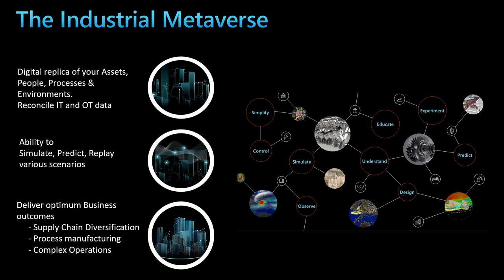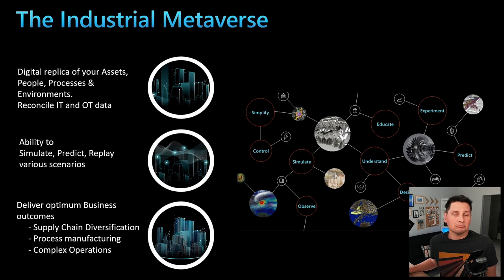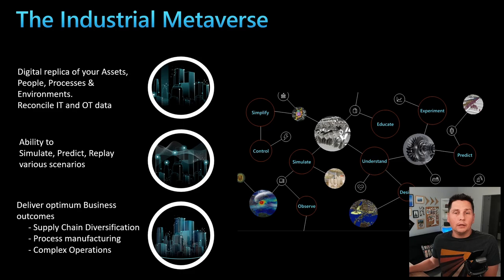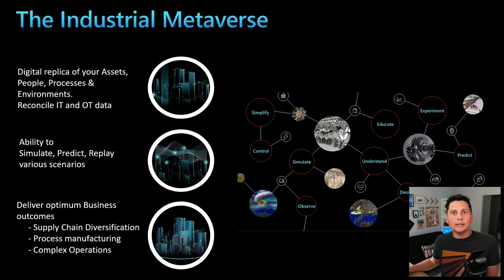Before jumping into the demo, I want to touch on one concept which we call the industrial metaverse. You certainly think of the metaverse as the ability to reconcile the digital and real worlds — and you are perfectly right. Beyond communication scenarios, what makes the metaverse possible is the ability to build a digital replica of assets, people, processes, and environments called twins and describe their relationships. This replica can be used to reconcile IT and OT data through a powerful graph and enables simulating, predicting, and replaying various scenarios. So the world basically becomes your app canvas.